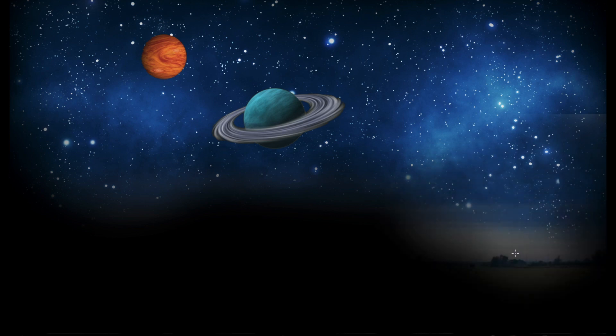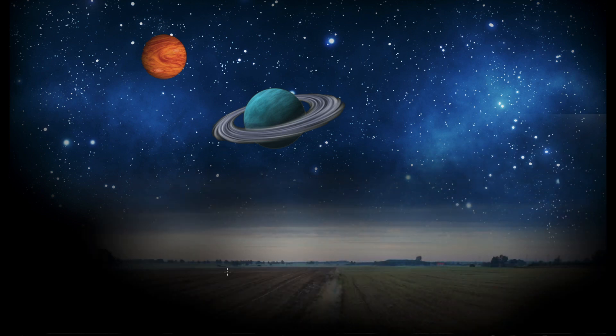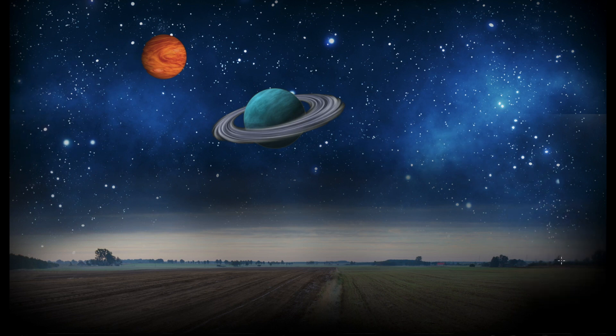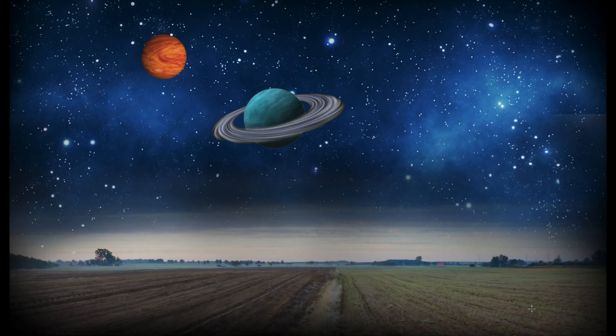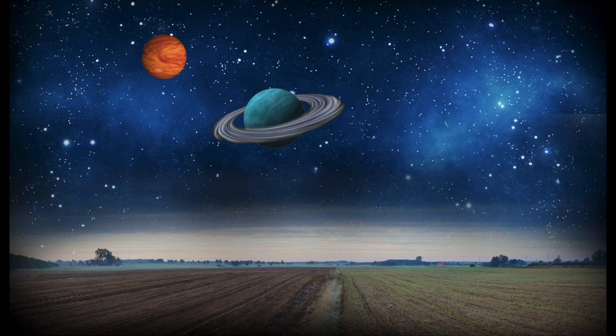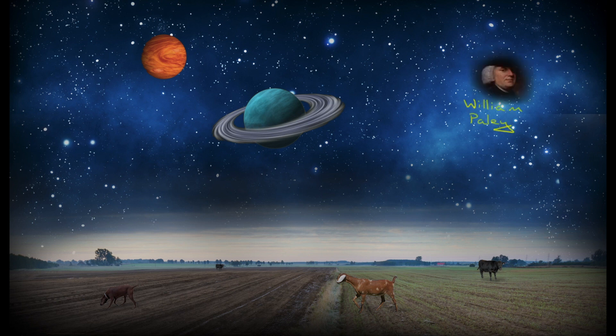But there is also the Earth. And on the Earth, there are very particular things. There are animals, biology. And William Paley argued that these sorts of things, unlike the others, are in fact designed.